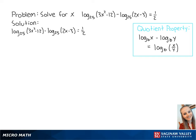We can use the quotient property to combine the logs. So we get log base 25 of 3x squared minus 12 over 2x minus 3 equals 1 half.